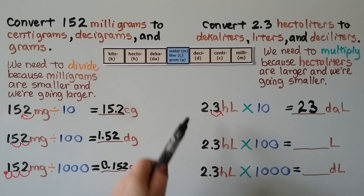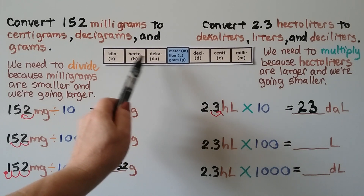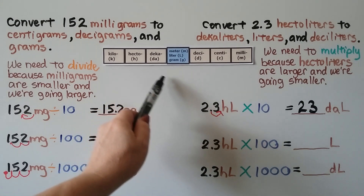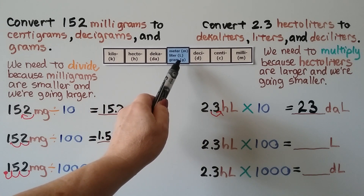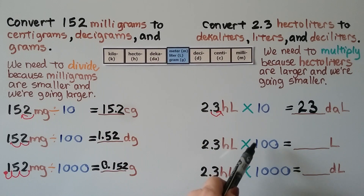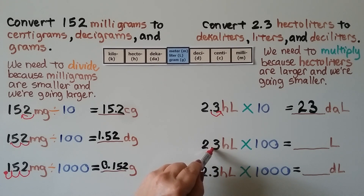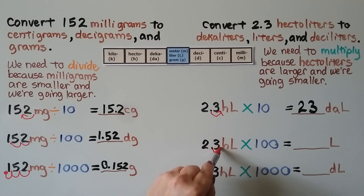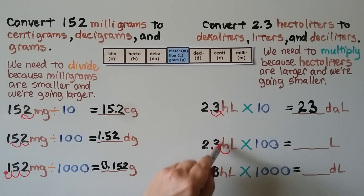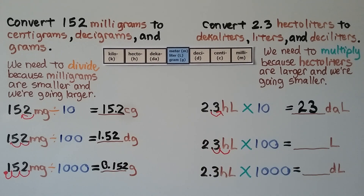To change it to liters, we're going from hectoliters 1, 2 to liters — that's 2 powers of 10, so we multiply by 100 (10 × 10). The decimal point moves 2 hops to the right, so we add a zero as a placeholder. That gives us 230 liters.